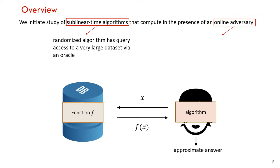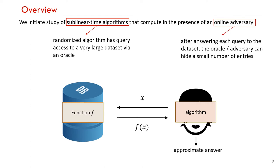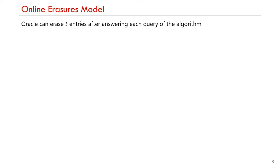The online adversary we consider is the following. After answering each query to the data set, the oracle or the adversary can hide a small number of entries from the analyst. I will formally define both the adversarial model we consider as well as the tasks we consider within this model. Let's start by defining the adversarial model, which we call the online erasures model. It is parameterized by a natural number t. After answering each query of the algorithm, the adversarial oracle can erase up to t entries from the input function.